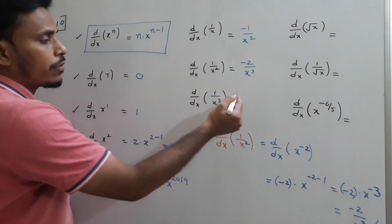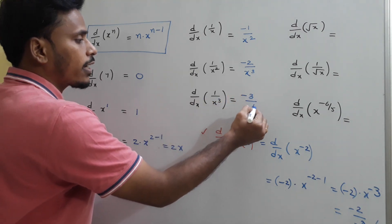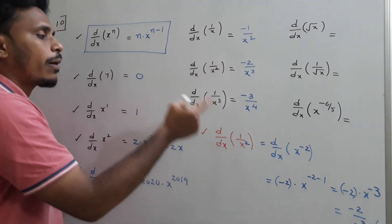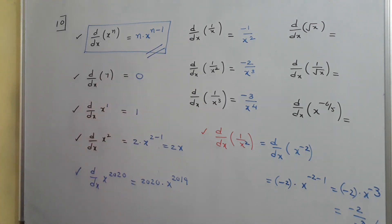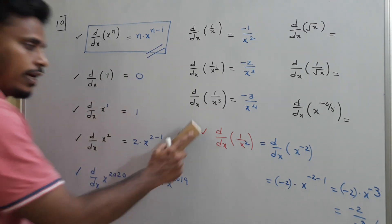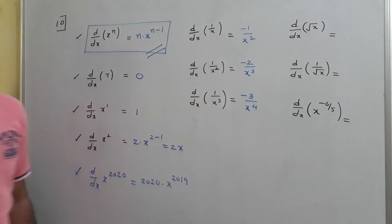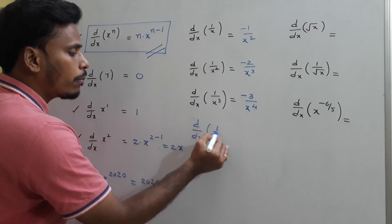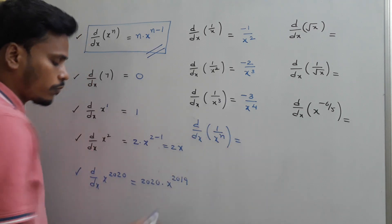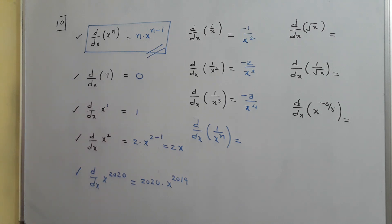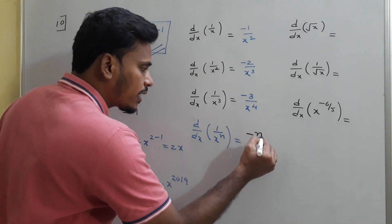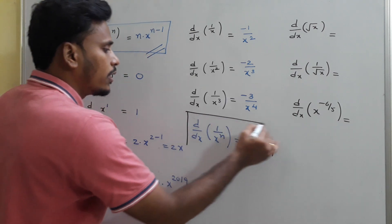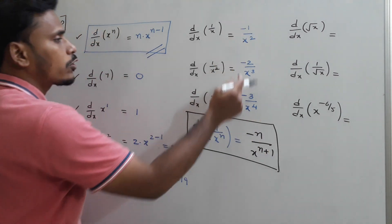For d/dx of 1/x³, the answer is -3/x⁴. Generalizing this format: d/dx of 1/x^n equals -n divided by x to the power n plus 1. This is a useful general formula for this type of function.